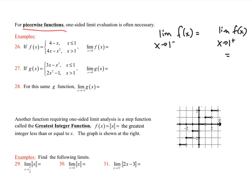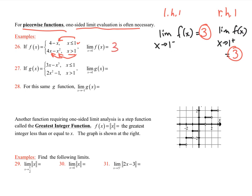Piecewise functions: one-sided limits may be necessary. The left-handed limit and the right-handed limit need to be equal for the overall limit to exist. For the f(x) piecewise function with the split at x = 1: the left-sided limit gives 4 - 1 = 3, and the right-sided limit also gives 4 - 1 = 3. Since these are the same, the overall limit is 3.